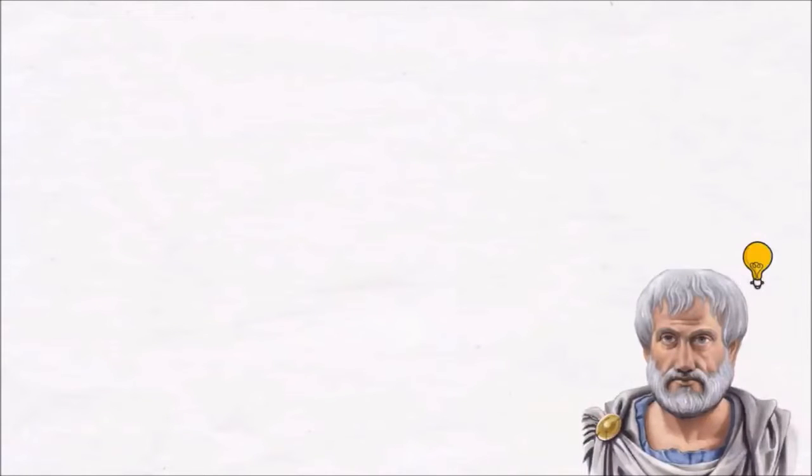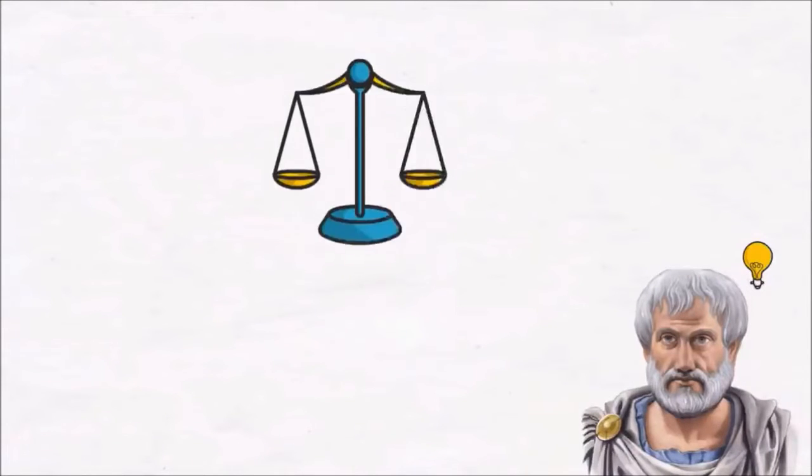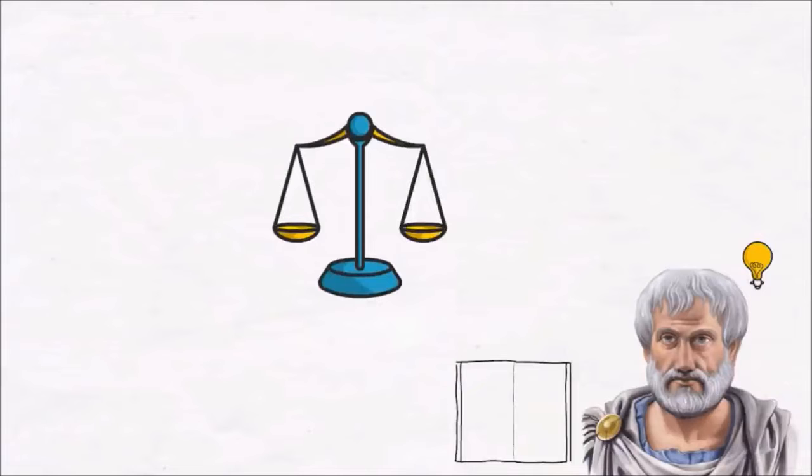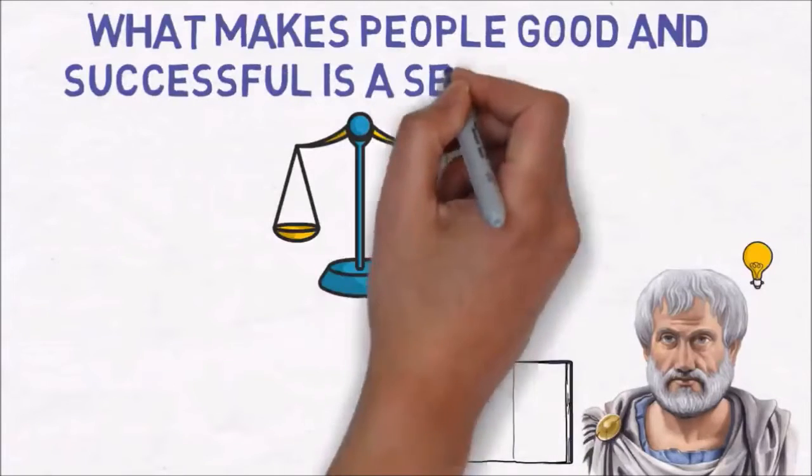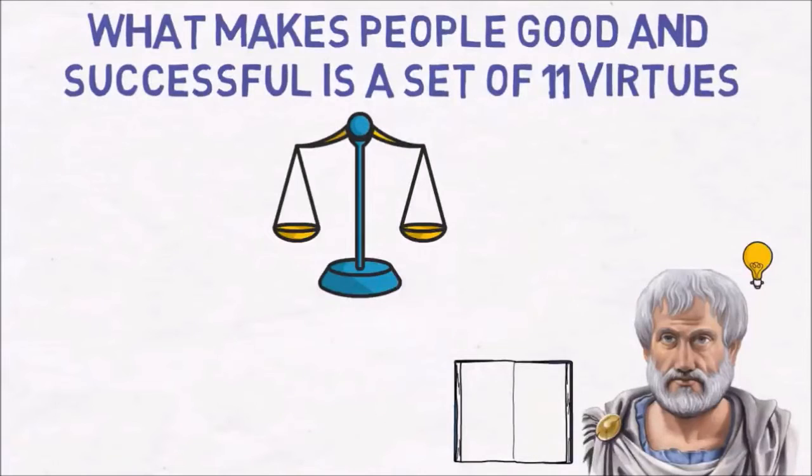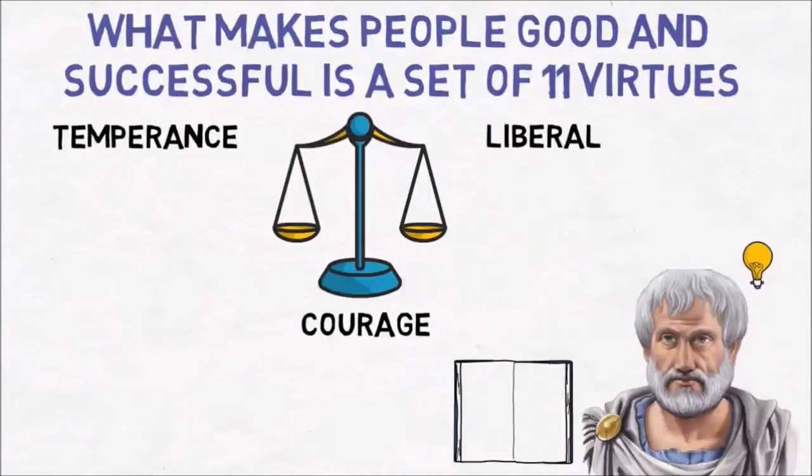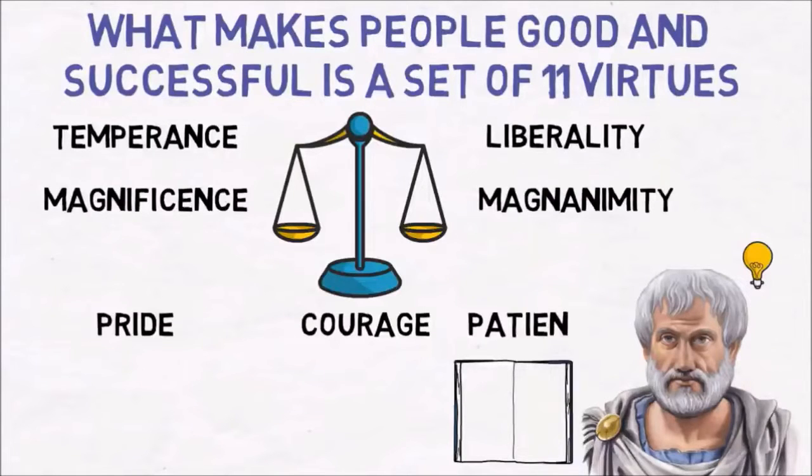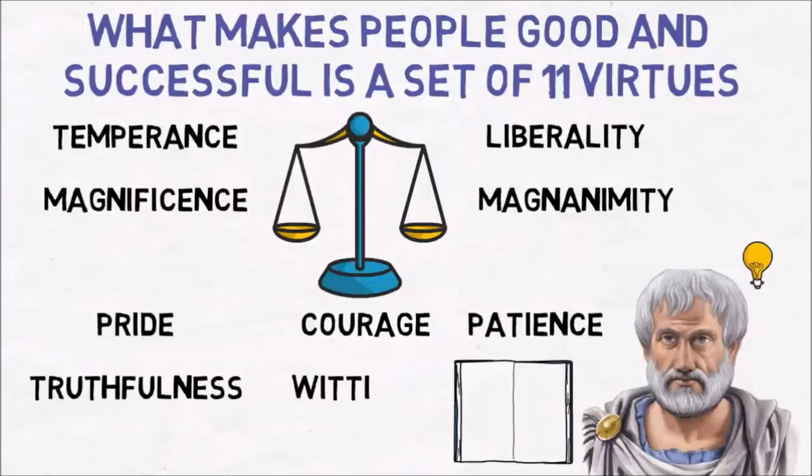One of the main ideas of Aristotle's teachings is the idea of finding balance. In the book Nicomachean Ethics, Aristotle identified that what makes people good and successful is a set of eleven virtues: courage, temperance, liberality, magnificence, magnanimity, pride, patience, truthfulness, wittiness, friendliness and modesty.